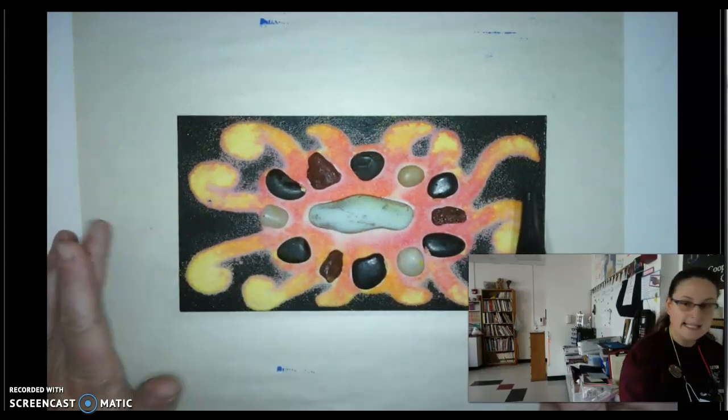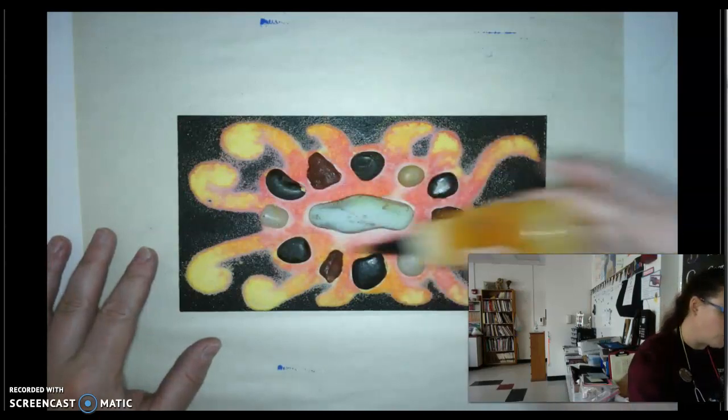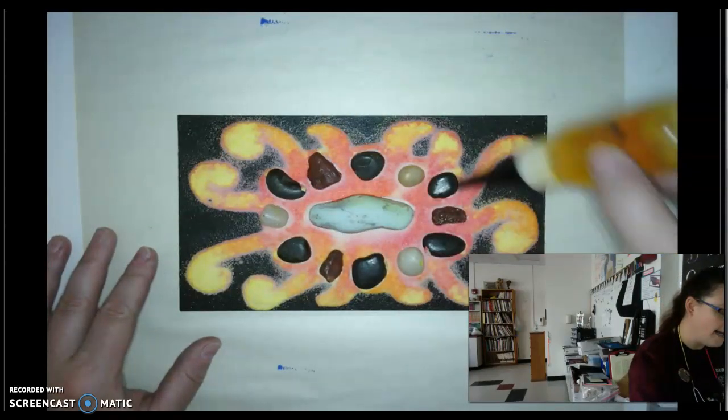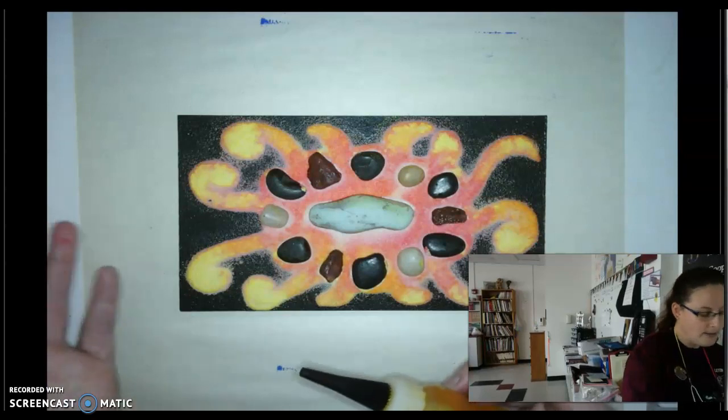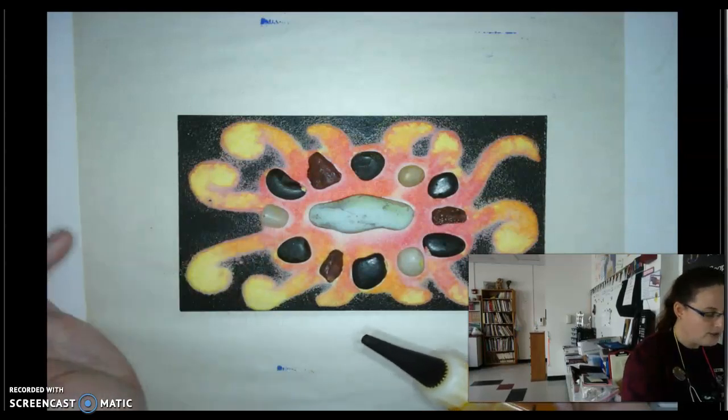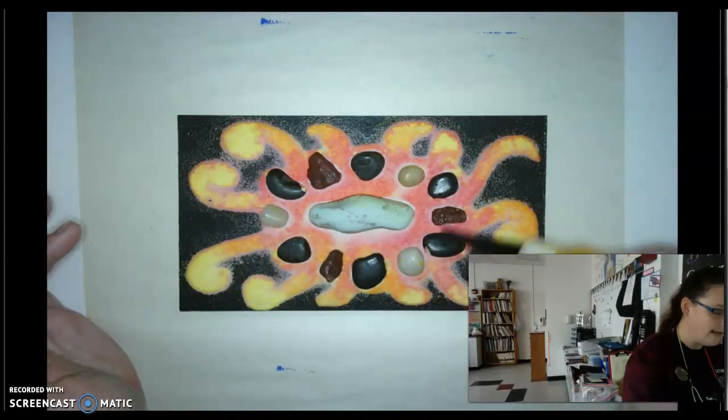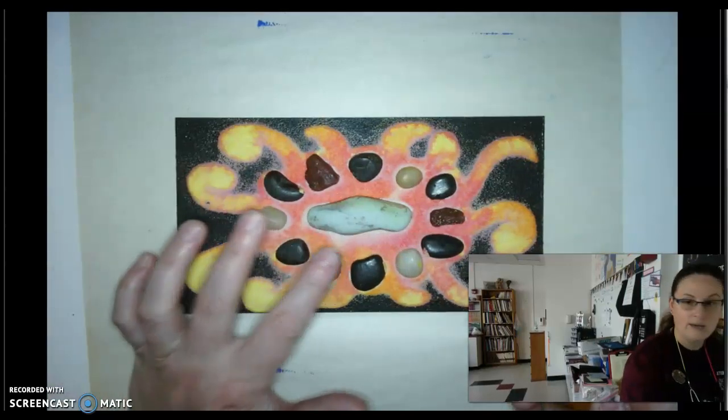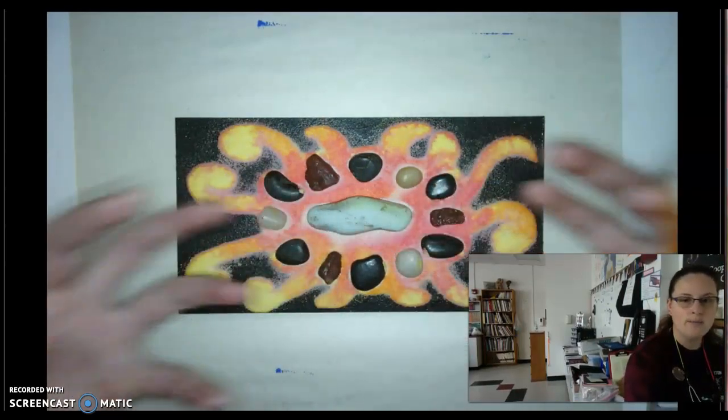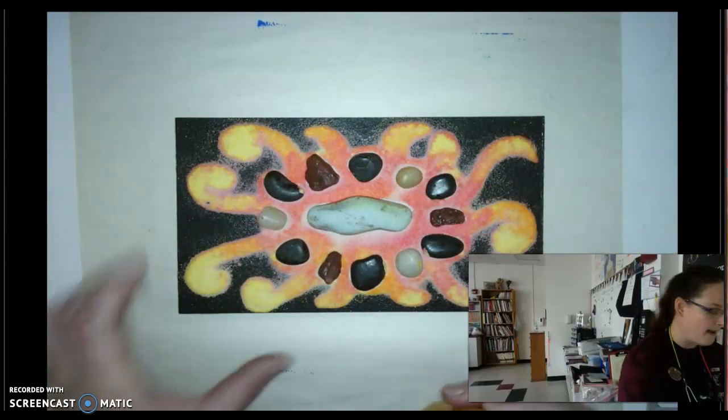If you were using this in class, we would just squirt it on in areas you wanted to have your color. I used all my warm colors: red, orange, and yellow. But I started with yellow, made everything yellow, then I went in with orange, and then I went in with red to create this warmth coming out from my stones.